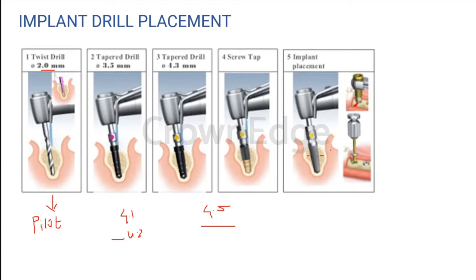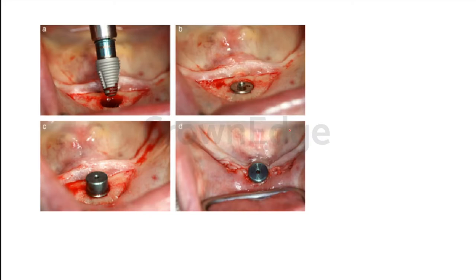Once you've finished drilling for the implant, we go ahead placing the implant with either hand torque — using something like a hand torque wrench — or we use a machine torque, which uses the physio that we have for placing the implant itself. These are basically the steps. After we place the implant, we check for how much torque we have — how much torque is available when we're pushing the implant through — and then we place something called a cover screw.